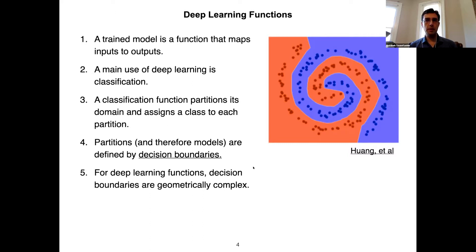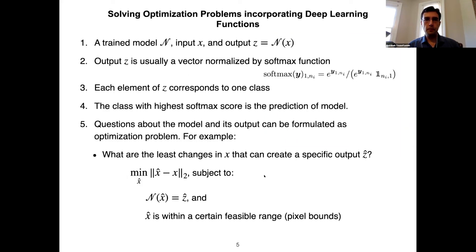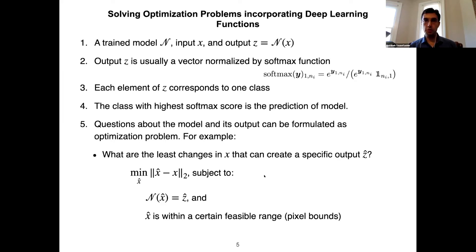The decision boundaries for deep learning are in high-dimensional space; they are geometrically complex and not easy to study or investigate. Let's define some notation: consider a trained model N, some input X, and the model maps X to output Z. Z is usually a vector normalized by the softmax function, and each element of Z corresponds to one class. The class with the highest softmax score is the prediction of the model. We can try to formulate interpretation questions as optimization problems, incorporating N as a function.